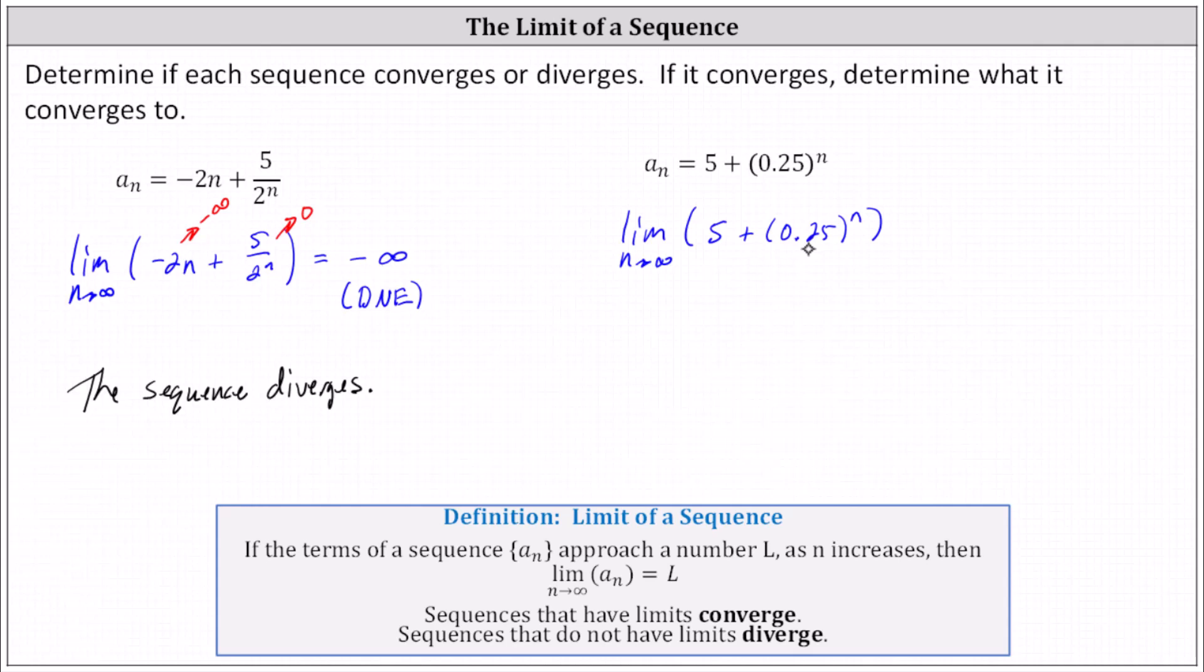the value gets smaller and smaller and approaches zero. Therefore, the limit is equal to 5 plus 0, which is 5. Because the limit exists, the sequence converges, and the sequence converges to 5.